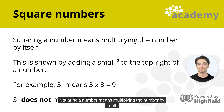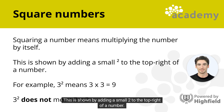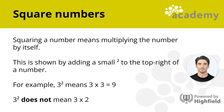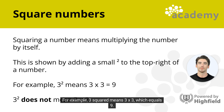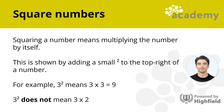Squaring a number means multiplying the number by itself. This is shown by adding a small 2 to the top right of a number. For example, 3 squared means 3 multiplied by 3, which equals 9. Note that 3 squared does not mean 3 multiplied by 2.